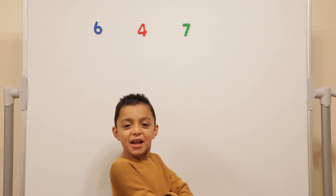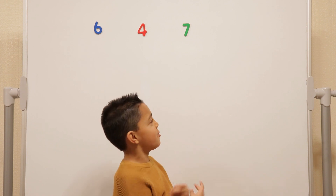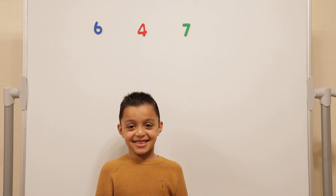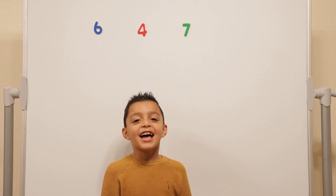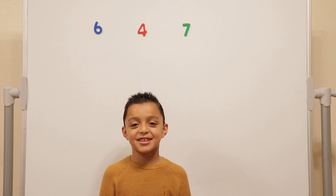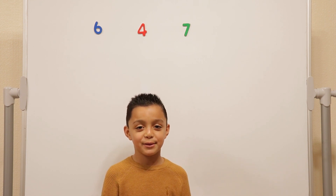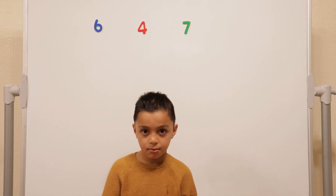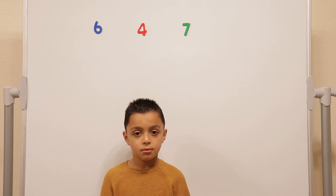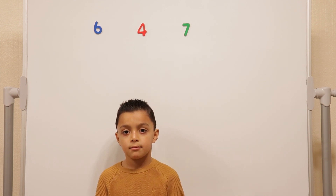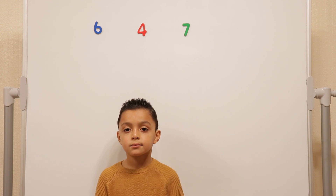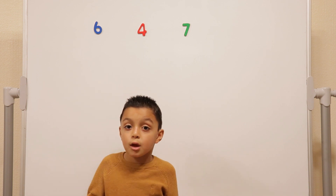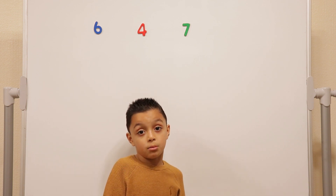Hello, welcome to Maths with Niall. Today we will be rearranging some numbers. What numbers do you have, Niall? Four, seven, and six. We're going to see how many three-digit numbers we can make using those numbers. We have two rules. We're not allowed to use one of these numbers more than once, and we can't use any numbers that aren't on the board.